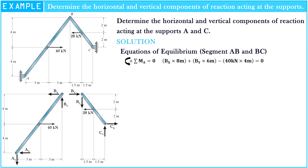Hence, Bx is equal to 40 kN multiplied by 4 meters, minus By multiplied by 6 meters, divided by 8 meters. The sigma of moment at point C is equal to zero.